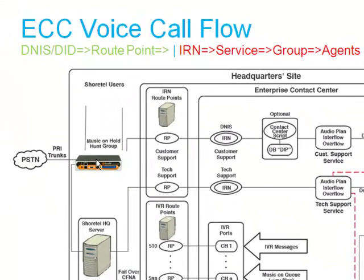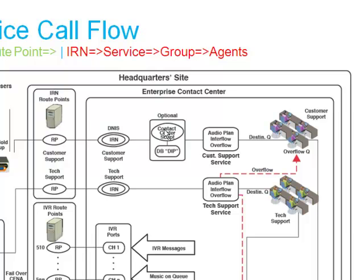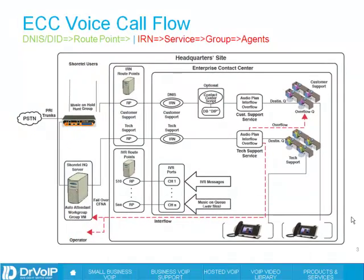A call comes in from the PSTN and hits a route point. In this case, we've got two route points — one for customer support, one for tech support. That route point will then couple with an IRN. Perhaps the service calls out some script that you want to run before processing the call, like 'please enter your account number.' Then the call will hit its destination group and ultimately ring your agents.